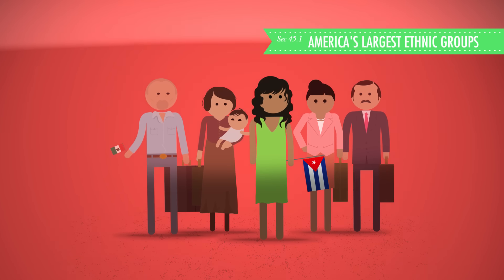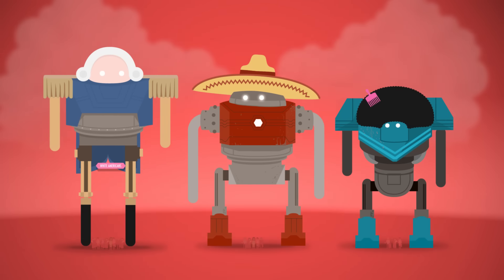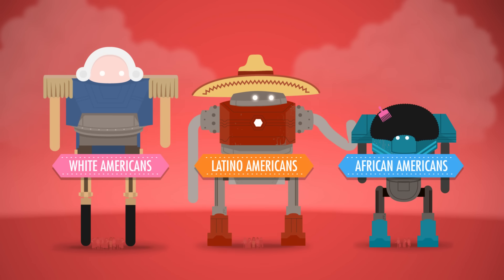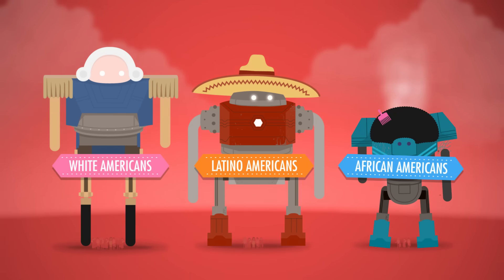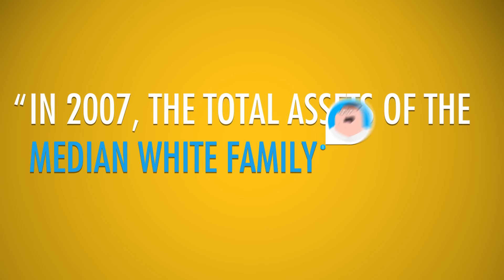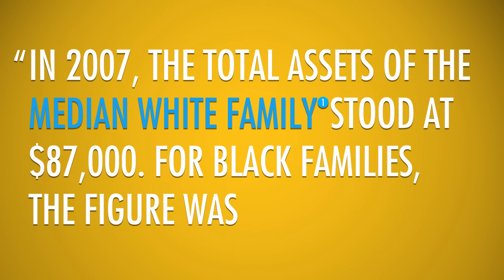Latinos were the largest immigrant group by far, with Mexicans making up the largest ethnic group. And by 2007, Latinos would replace African Americans as the second largest ethnic group. Latinos suffered disproportionate poverty, and despite significant economic gains during the 1990s, African Americans still found their economic opportunities limited. According to Eric Foner, in 2007, the total assets of the median white family stood at $87,000. For black families, the figure was $5,400.